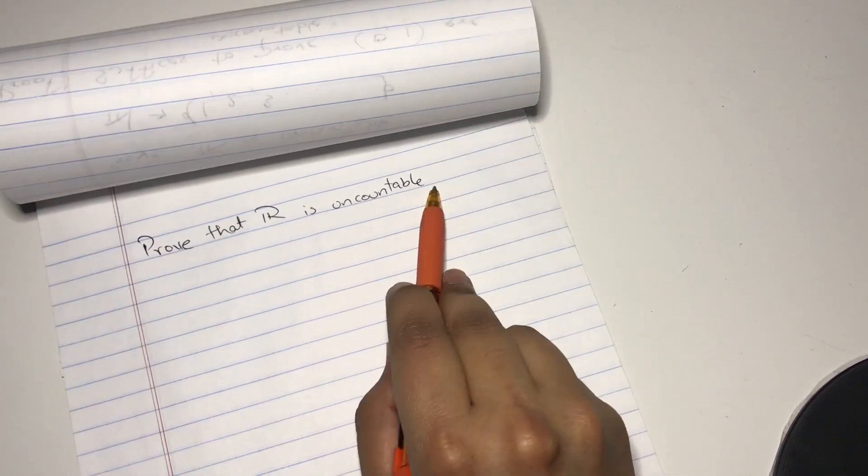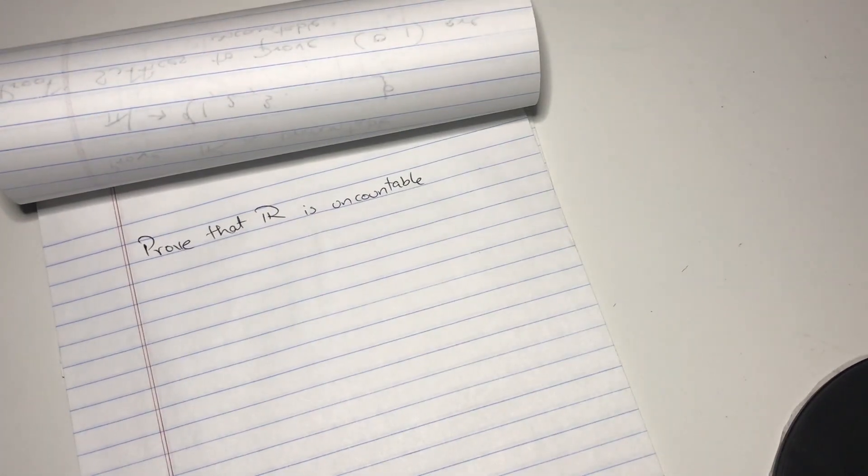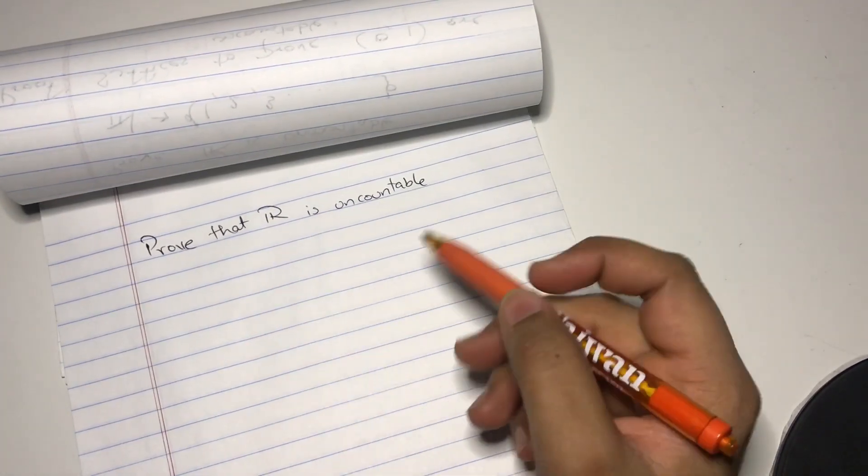Now it's important to know what uncountable is. This definition is pretty simple. It's an infinite set which is not countable.